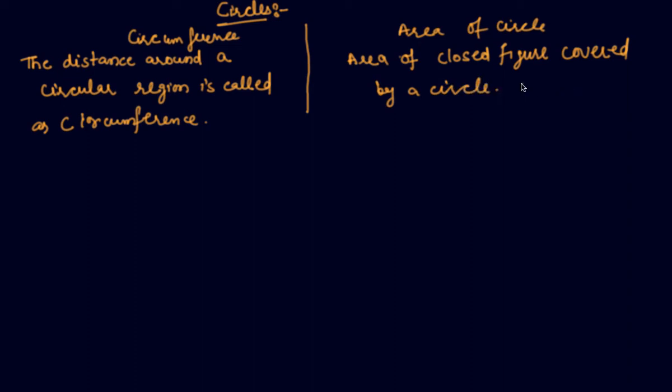And this is the area of closed figure covered by circle, is called the area of circle. So what is the basic difference?